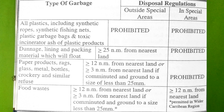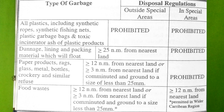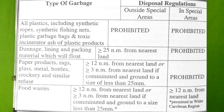Paper products, rags, glass, metal, bottles, crockery, and similar refuse are allowed to be disposed of greater than 12 nautical miles from the nearest land, or 3 nautical miles if comminuted and ground to a size of less than 25 mm, but they are prohibited in special areas. Food waste is allowed to discharge greater than 12 nautical miles from the nearest land, or 3 nautical miles if comminuted and ground to less than 25 mm; in special areas, food waste may be discharged greater than 12 nautical miles from the nearest land.